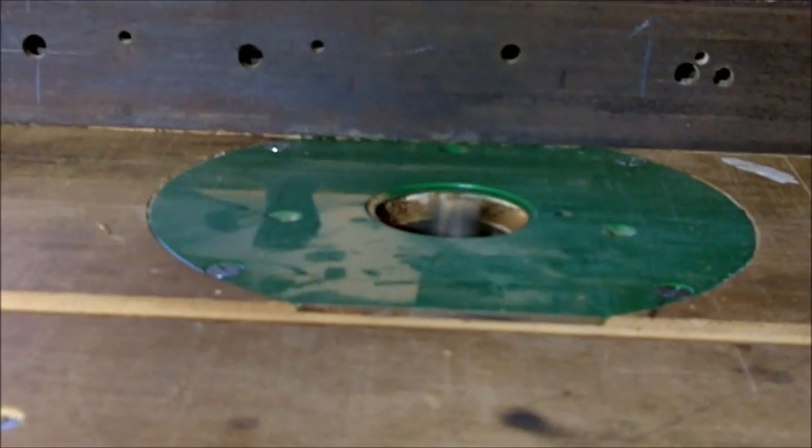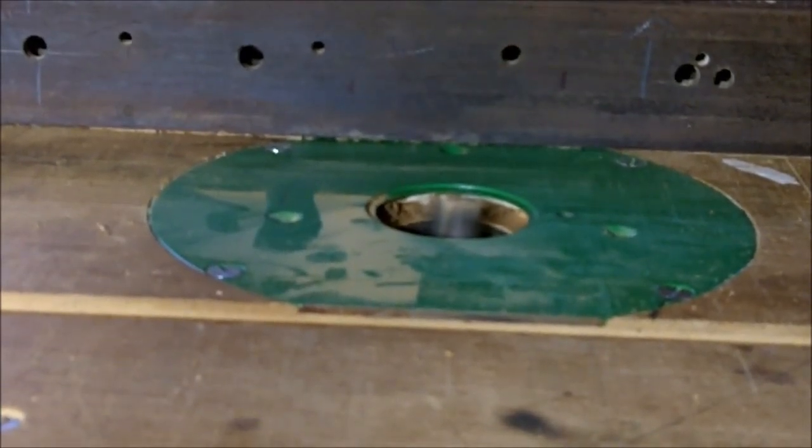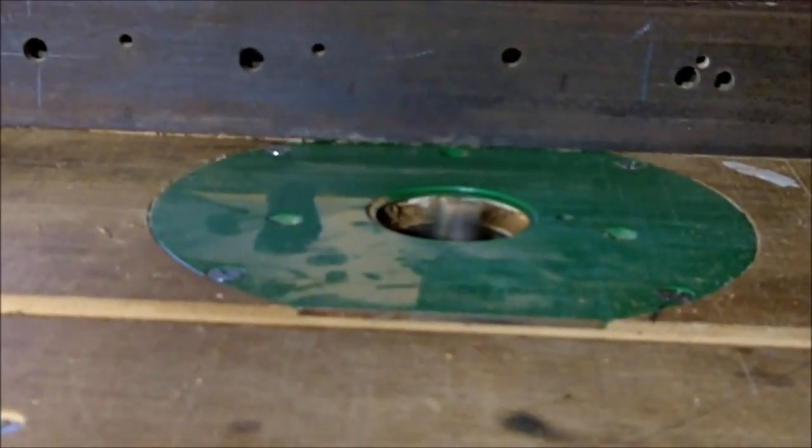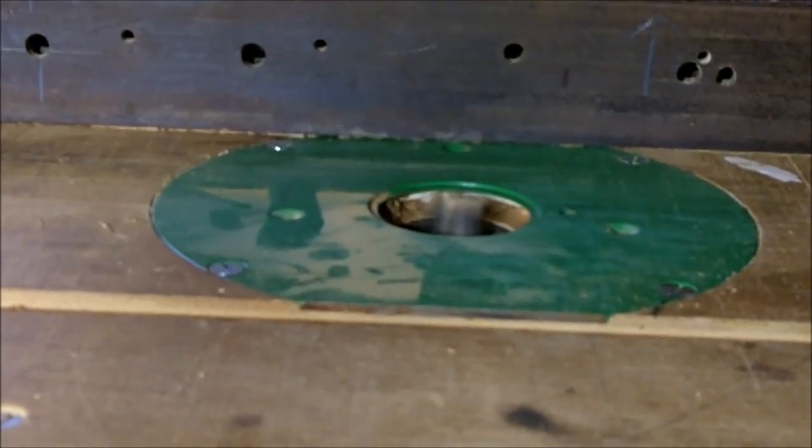In a stopped rebate, the rebate doesn't go all the way to the end of the stile. I need to start with a plunge cut and stop at the required distance.